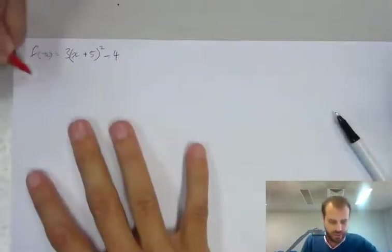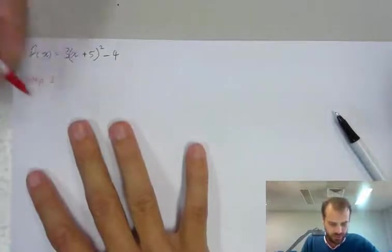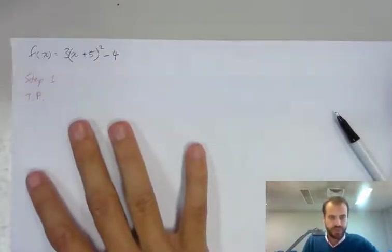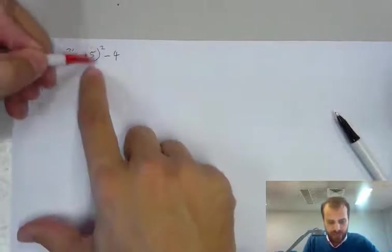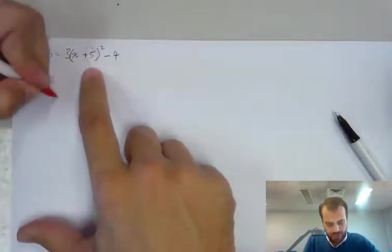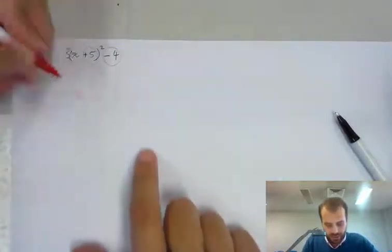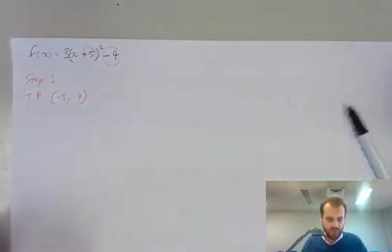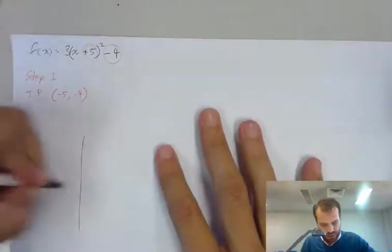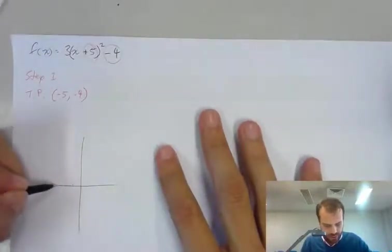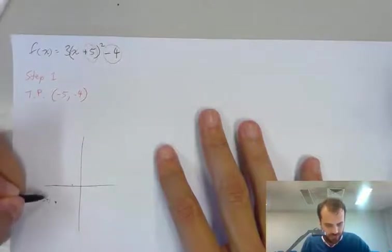So I'm going to sketch this function. Step 1: find the turning point. Now the turning point is going to be this, but the opposite of what you'd expect, and it's going to be this and exactly what it is. It's going to be minus 5, minus 4. So here, here, 1, 2, 3, 4, 5, 1, 2, 3, 4. It's here at minus 5, minus 4. There's my turning point.